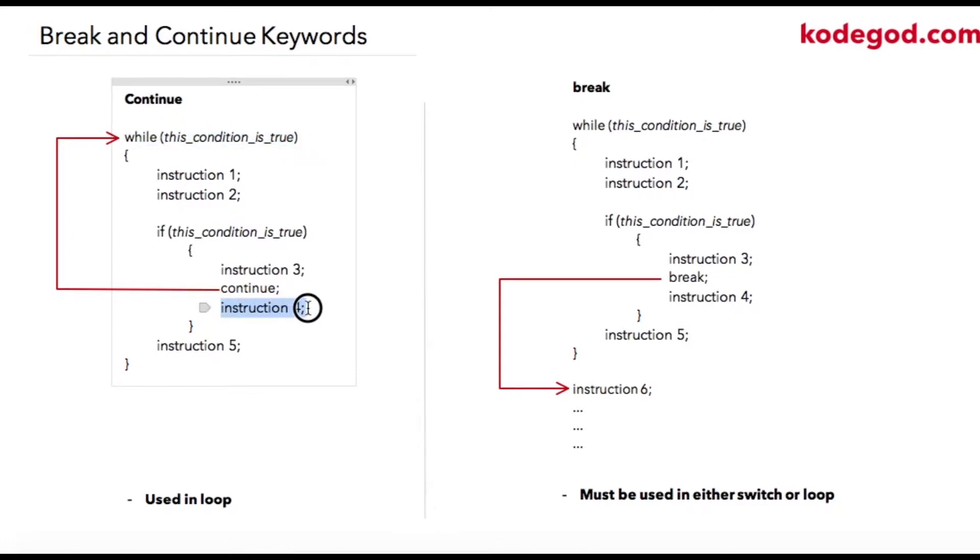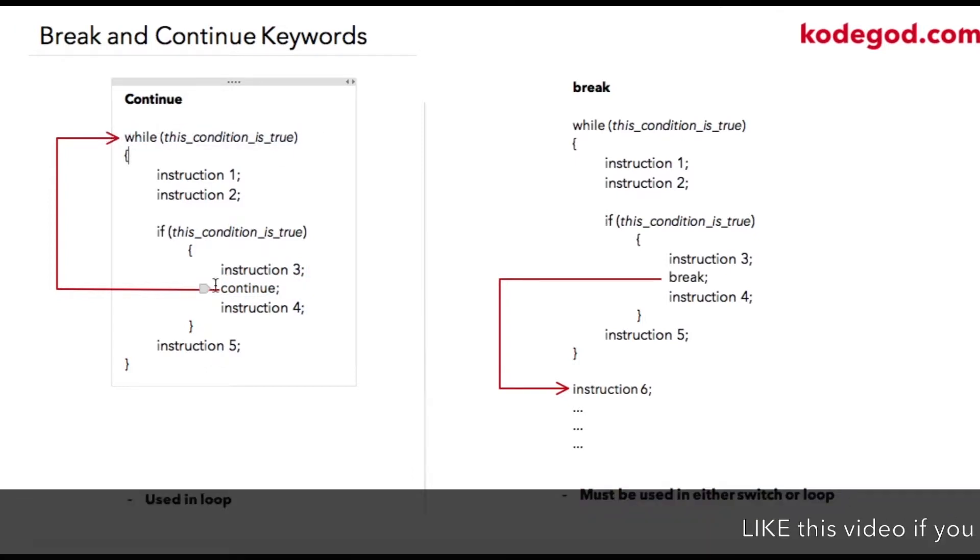Again, in the next iteration, instruction 1 and 2 will be executed. If the condition is false, this whole block will be skipped and instruction 5 will be executed. So this whole process will continue until the while condition is true. The continue keyword can be used wherever you want to skip few instructions based on some condition.